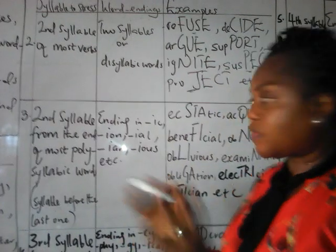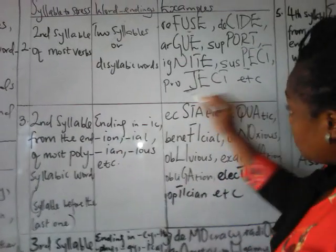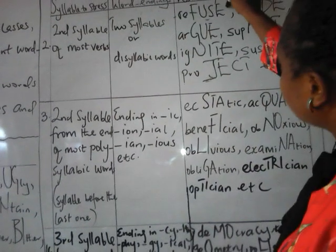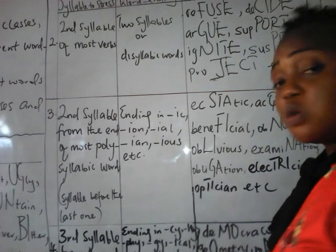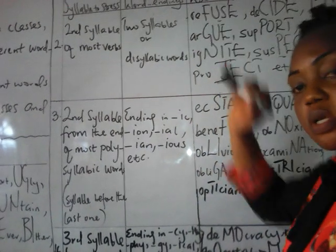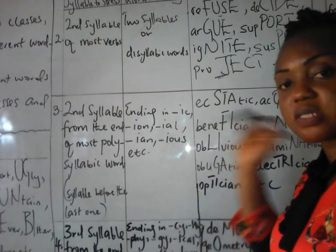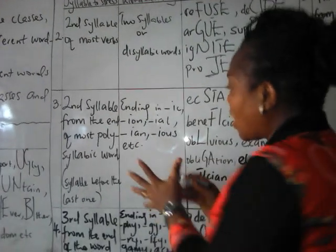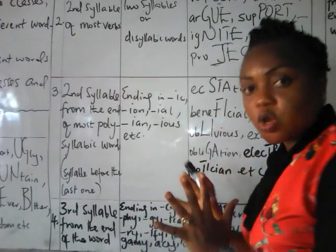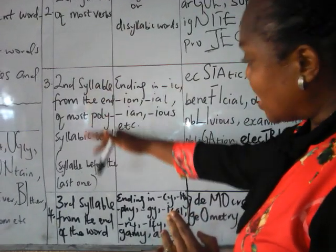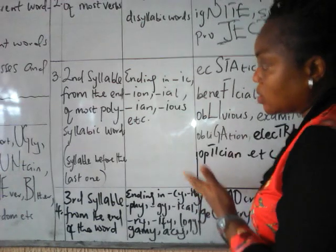If PROJECT is a verb, the stress falls on the second syllable: proCECT. If it happens to be a noun, we stress the first syllable: PROject. Now, moving down, we have our polysyllabic words, which are normally the favorites of our examination bodies. Polysyllabic words are stressed on the second syllable from behind.